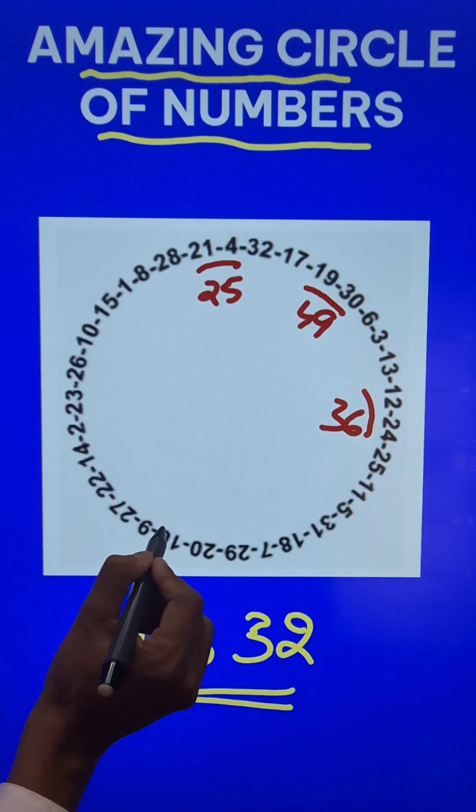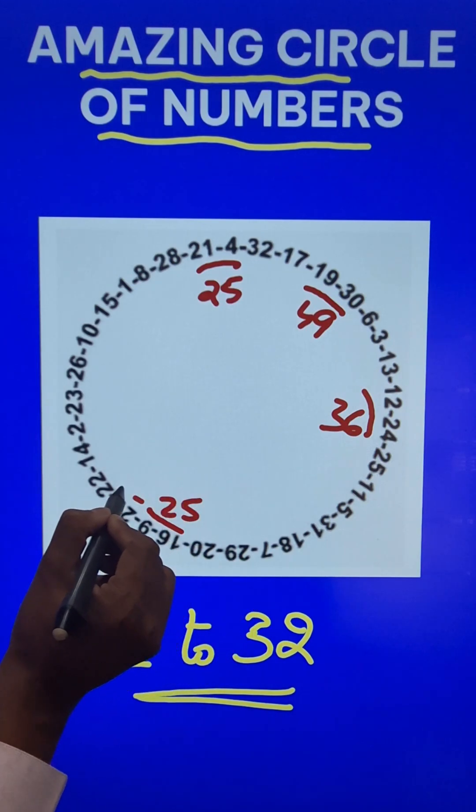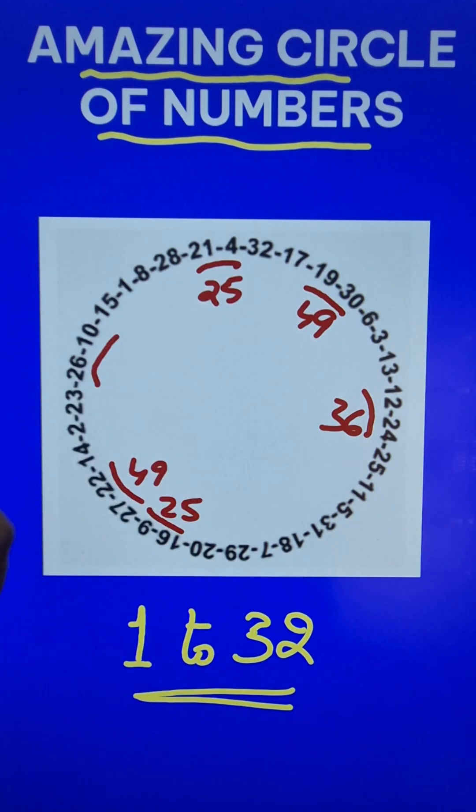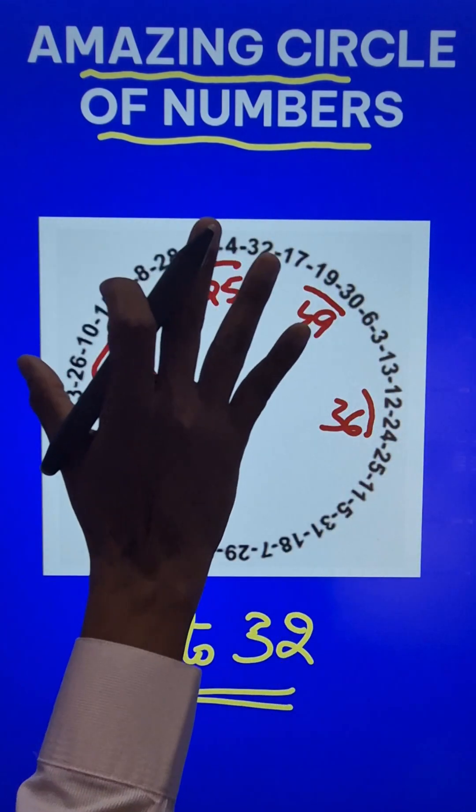You can take any two numbers like this again: 16 and 9, this is 25. 27 and 22, it is 49. 26 plus 10, it is 36. Everywhere this property will hold good.